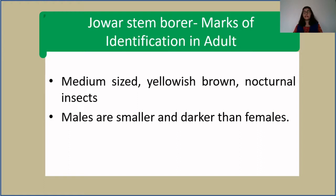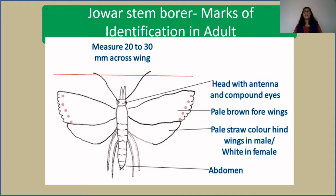Here you can see the diagrammatic representation of Jawar stem borer. It measures 20 to 30 millimeters across the wing. The head has antennae and compound eyes. Forewings are pale brown in color with dark brown to black spots towards the margin of the wings. The hind wing differs between sexes — straw colored in males and white in females. The abdomen is large.